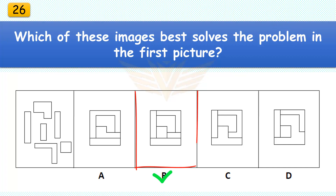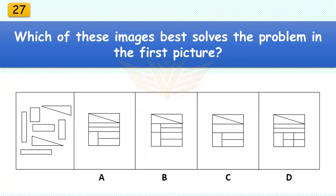Which of these images best solves the problem in the first picture? The correct answer is B. There are six pieces in the assembled puzzle.